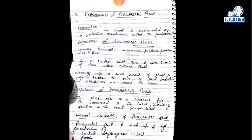What is pericardium? The heart is surrounded by a protective membrane that is called the pericardium. Normally the pericardial membrane produces pericardial fluid. In a healthy heart, there is up to 50 ml of clear straw-colored fluid. Normally only a small amount of fluid is present because the rate of fluid production and absorption are about the same.